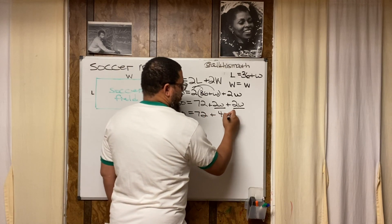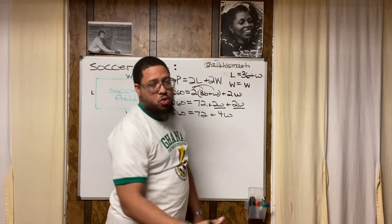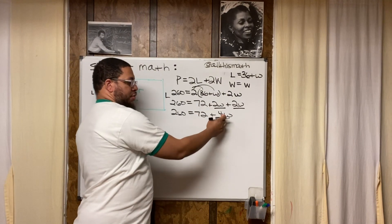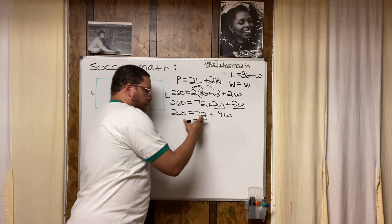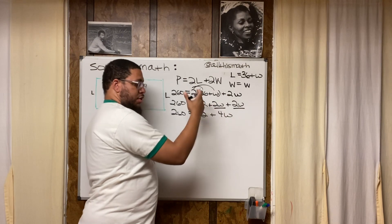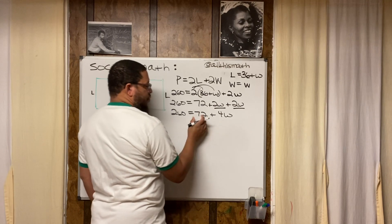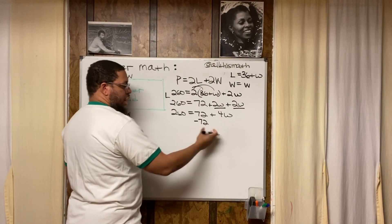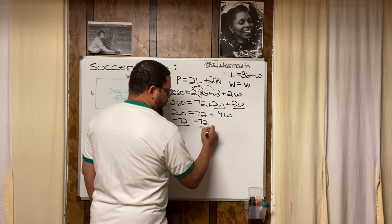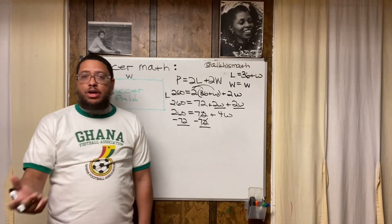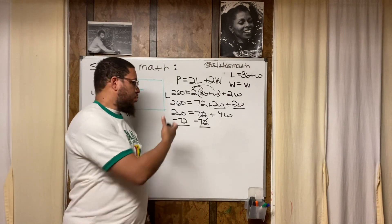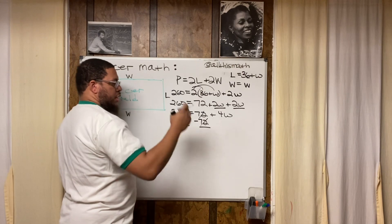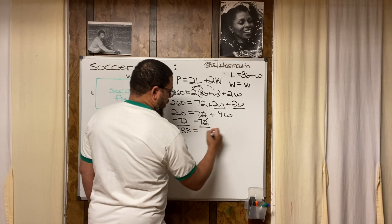Combining like terms: 2W plus 2W is 4W, so the equation becomes 260 equals 72 plus 4W. Our goal is to isolate the variable. First, get rid of 72 by doing the opposite operation — subtract 72 from both sides. 260 minus 72: take away 60 to get 200, then take away the remaining 12, giving 188. So 188 equals 4W.